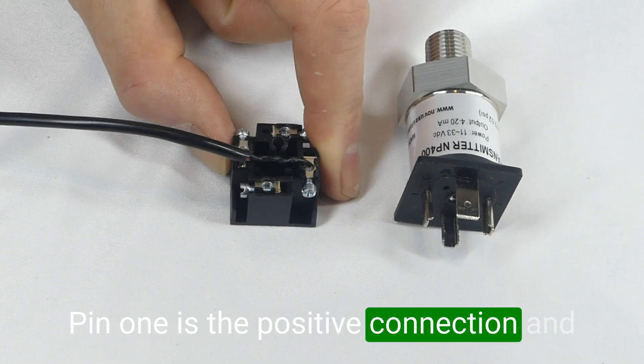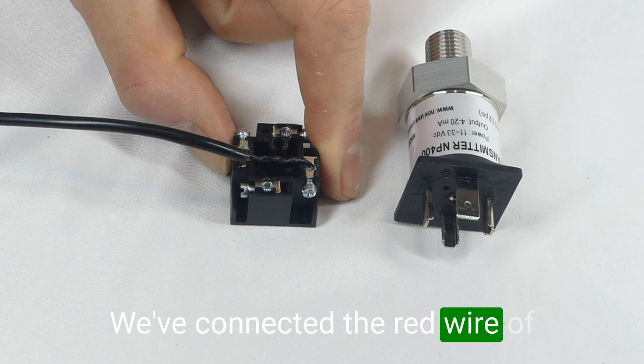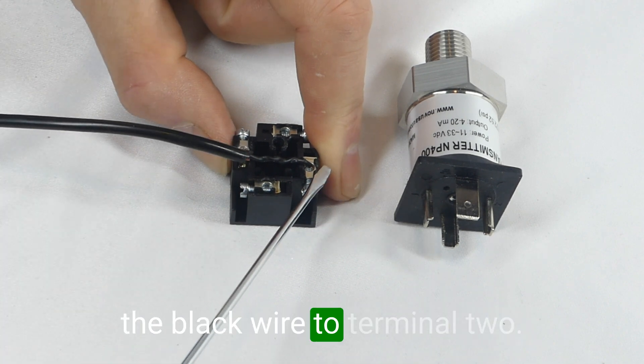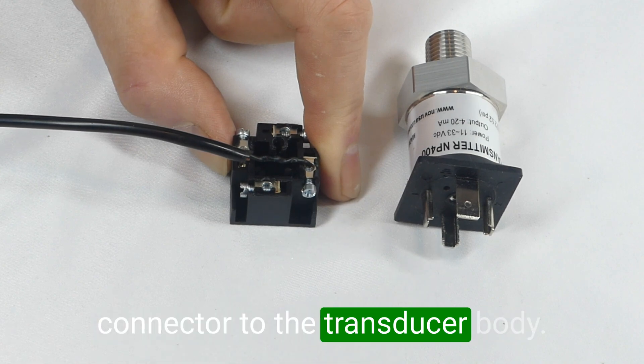Pin 1 is the positive connection and pin 2 is the negative connection. We've connected the red wire of our cable to terminal 1 and the black wire to terminal 2. We'll now reassemble the connector to the transducer body.